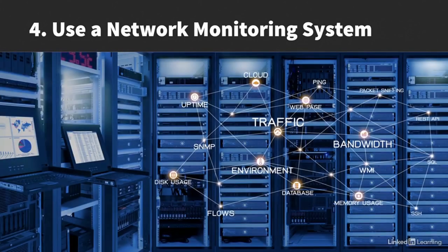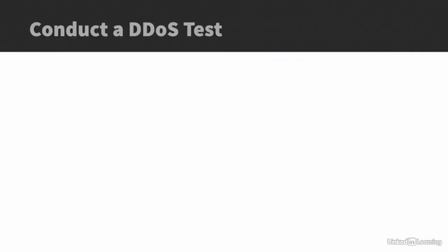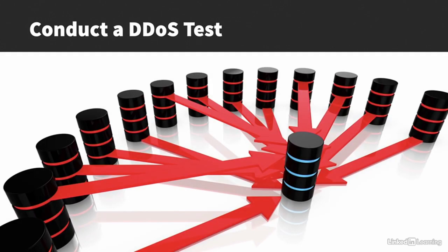Next, a good network monitoring system will detect unusual internet traffic like a DDoS attack once it starts. Notifications from a network monitoring system will give you an early warning so you can respond quickly. And finally, develop a denial-of-service response plan. Define who will be on the response team in the event of a DDoS attack and write down the procedures that must be followed. When you have these protections in place, you can hire a qualified third-party firm to conduct a DDoS test to help identify system misconfigurations, network bottlenecks, and poor incident response.